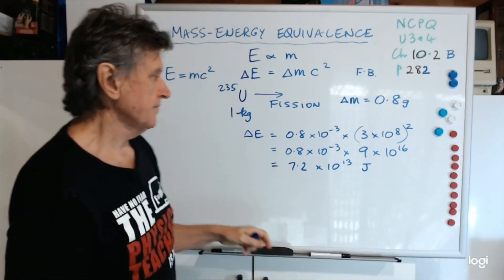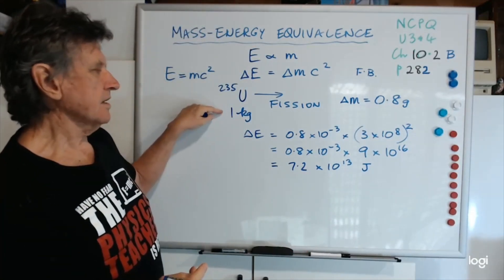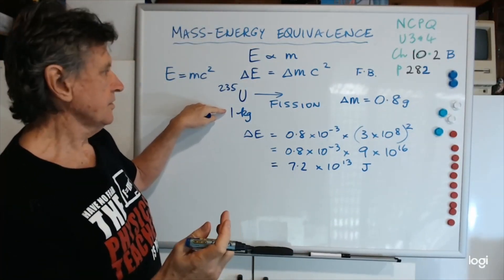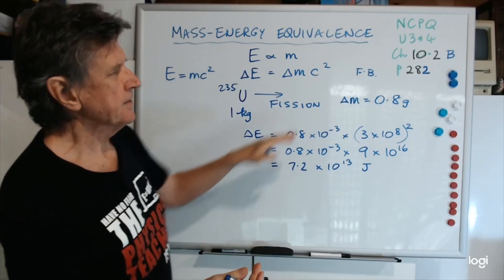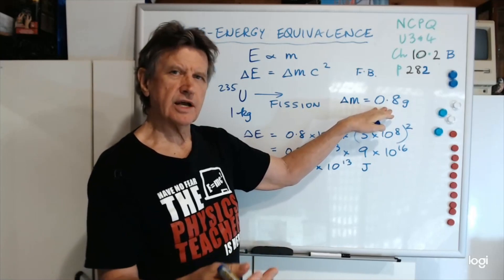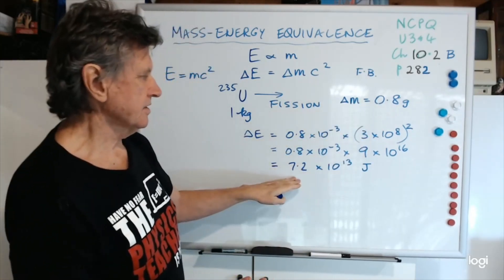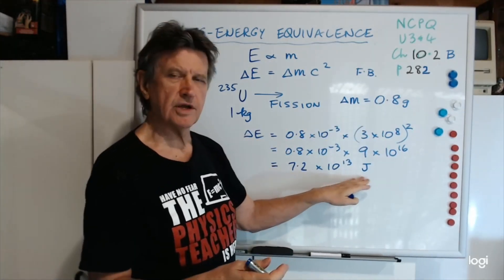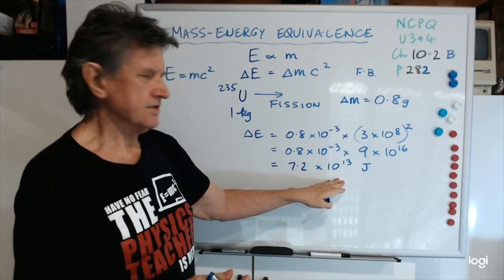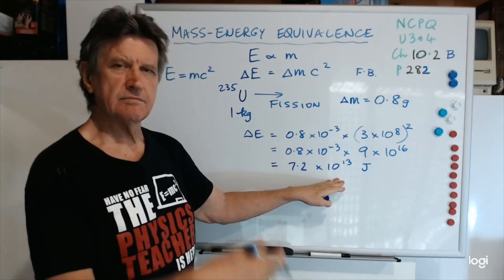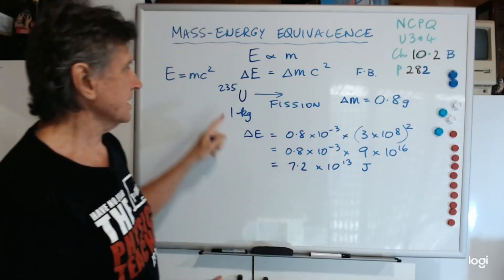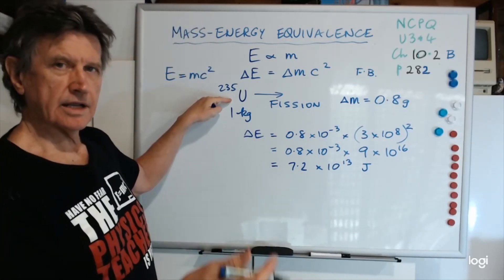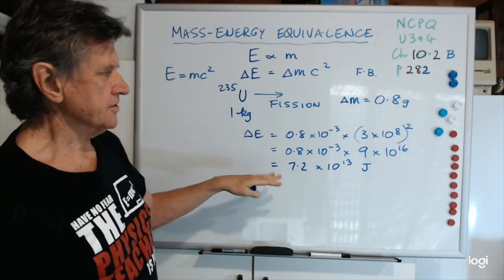That's the answer in joules. So 1 kilogram of uranium-235, when it undergoes fission, it has a mass defect of 0.8 of a gram, and that's equivalent to 7.2 by 10 to the 13 joules. Now that's a lot, that's more than a million million joules, and that's only from 1 kilogram undergoing fission. So that's a huge number.